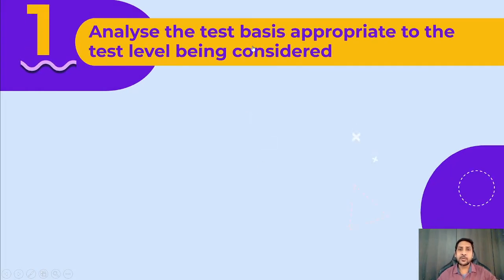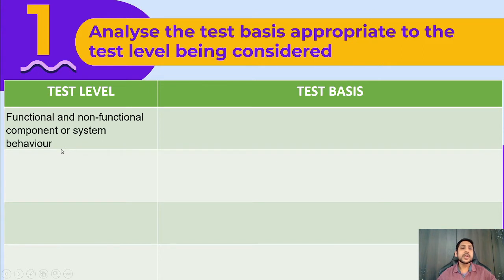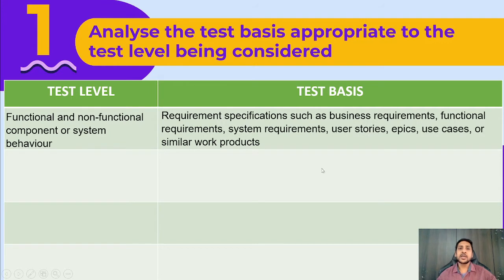The first task - analyze the test basis appropriate to the test level being considered. At the functional or non-functional component or system level, the requirements you will get are requirement specifications, business requirements, functional requirements, system requirements, user stories, API requirements, use cases or similar work products. You have to analyze this requirement if you are performing functional or non-functional related testing.